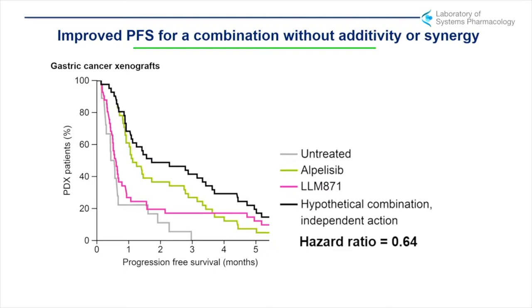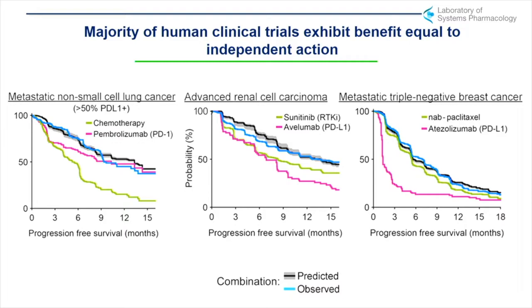We've now gone through almost all cases in which we look where the two agents are active. If one agent is not active, then you need a separate mechanism of independence. But when they are active, almost every case this is a sufficient explanation.